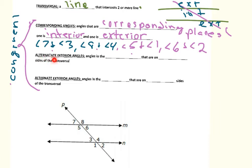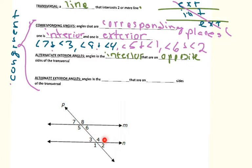Alternate interior angles are angles in the interior that are on opposite sides of the transversal. The interior angles are 5, 6, 3, and 4. Angles 5 and 4 are on opposite sides — that's one pair. Angles 3 and 6 are on opposite sides — that's another pair.